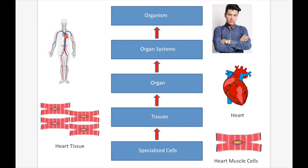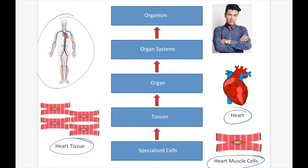For example, our specialized cells would be heart muscle cells — they'd all be the same kind of cells and they all perform a certain function. If you have a collection of heart muscle cells you create heart tissue. If you have a whole bunch of heart tissue you'll eventually make a heart, which is an organ. It's also going to have nerve tissue and a few different types of tissues that all perform a similar function to create our heart.